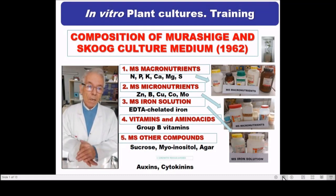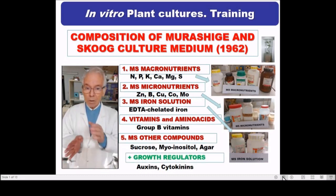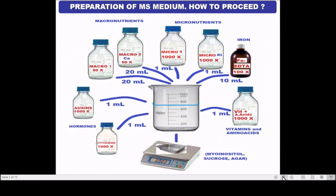Finally, you have to add some hormones like auxins and cytokinins. Regarding stock solutions: stock solutions are concentrated solutions of groups of media chemicals prepared ahead of time and used to make several batches of media. They are prepared at 10 to 1000-fold concentrations. Here we present a summary of stock solutions that must be prepared for all components of the MS medium, with different stock solutions: 50X, 100X, and 1000X.